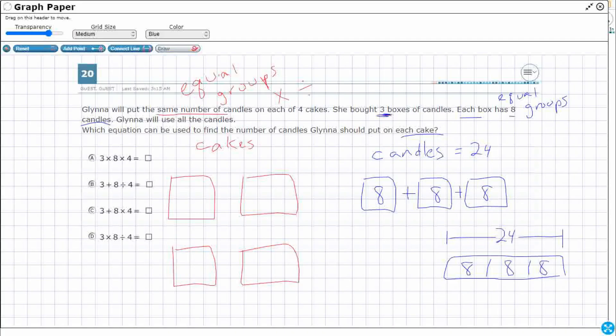So I need to put these 24 candles into these four cakes. So what I could do is I could take my total. You see how I kind of did that 24 into three. Watch this. What if I did this?